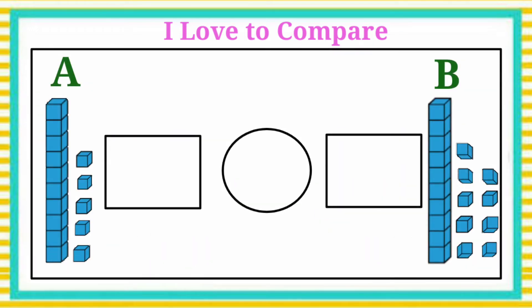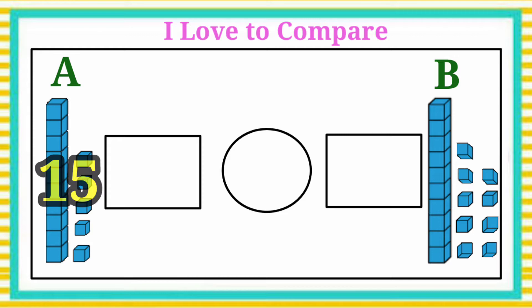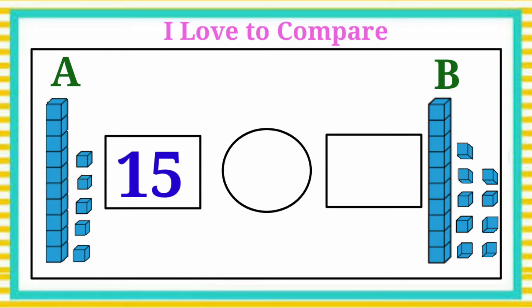Here we have two groups of blocks. Let's count Group A. This is one group of ten blocks and count other blocks. Ten, after eleven, twelve, thirteen, fourteen, fifteen. Group A has fifteen blocks. Let's write the number fifteen in the box.